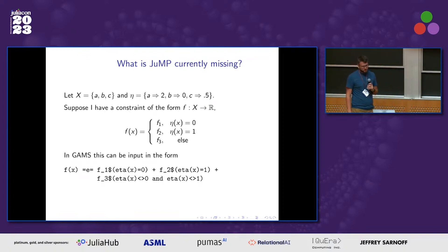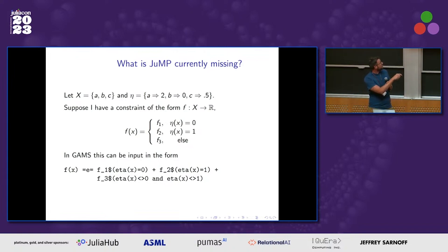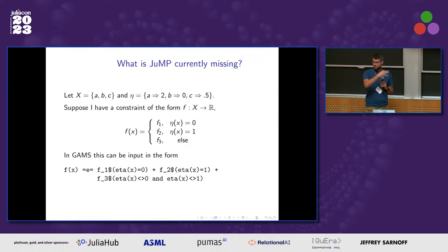There is one thing I miss from GAMS: parametric constraints. This comes up a lot with elasticities in economics — you'll have one elasticity if a parameter is zero, another if it's one, and something else otherwise. In GAMS, they have the dollar sign operator for this, which implements a piecewise function. It's not the most intuitive syntax, but it's very nice. I'm aware there are packages in Julia that do this, but the problem is I'm solving complementarity problems and going through the complementarity package, which makes it a whole issue. I'd very much like this in JuMP and might try to work on it.